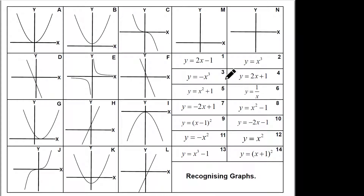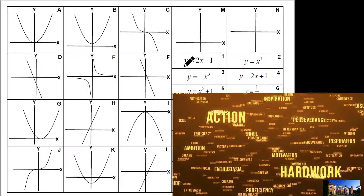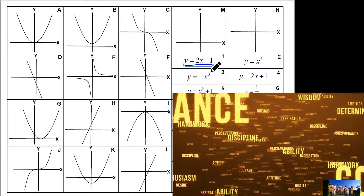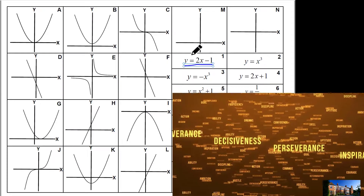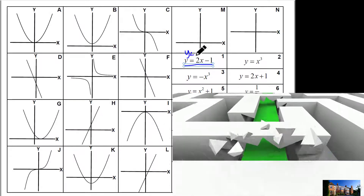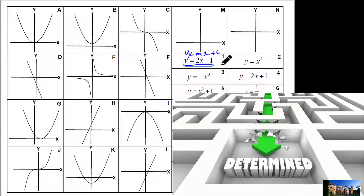Right, let's just recap recognizing graphs. You should be able to recognize all of these graphs, but let's just see what you can do. So question one: what letter can we match this up for? We know that's in the form y equals mx plus c, so that's a straight line graph because it's got a positive gradient of two.